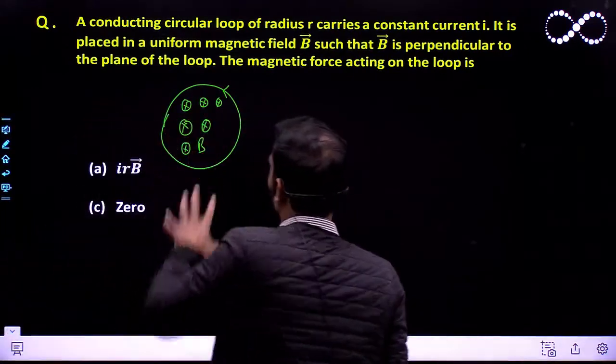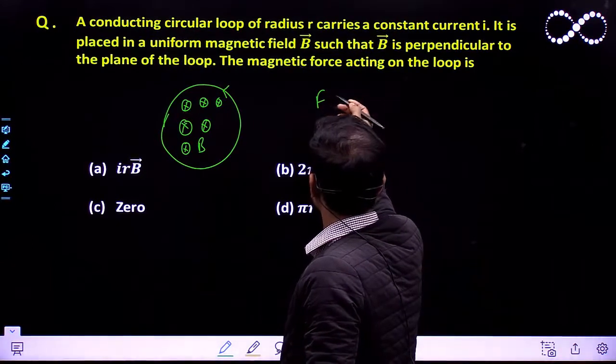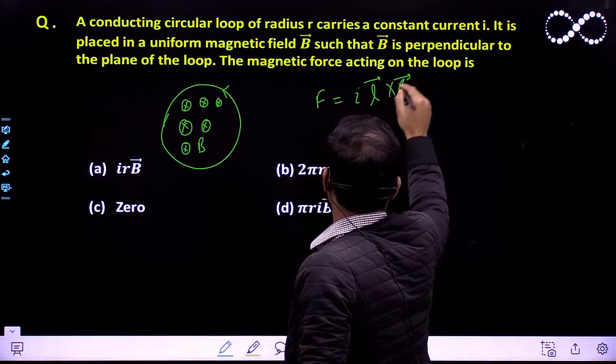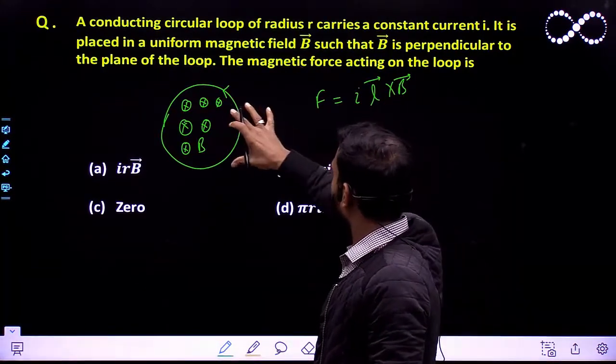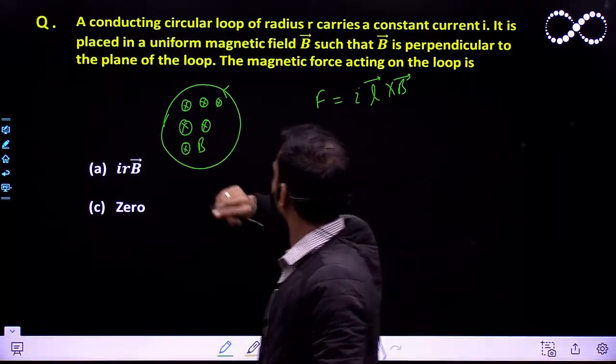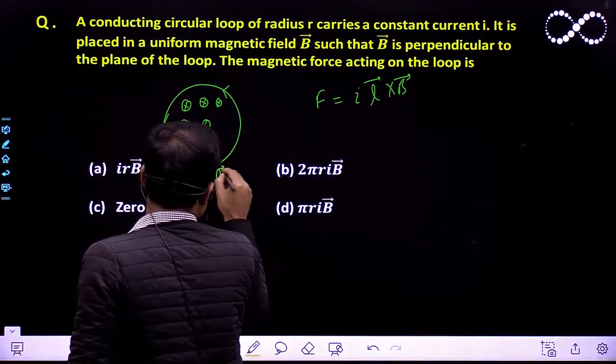So since the magnetic field is uniform, the force will be equal to the magnitude of force I L⃗ × B⃗. So I is the current element. Since magnetic field is uniform here, I can take the net current element. So since the wire is in a circular loop, the total L vector will become 0.